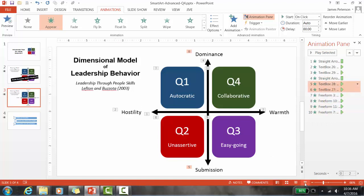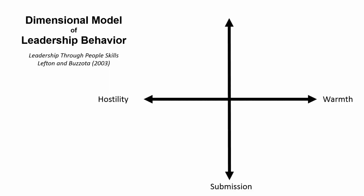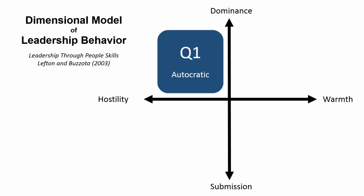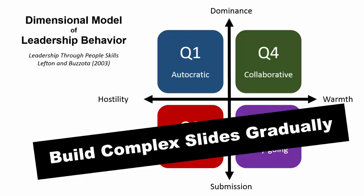Now I'm ready to give my presentation. Today I'm going to talk about the dimensional model of leadership behavior. I can talk about the horizontal dimension, then the vertical dimension, and then each of the leaders in order. I really like building complex slides gradually — it allows me to remember what I wanted to say at that moment, and it allows the audience to follow along with the presentation.